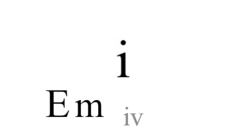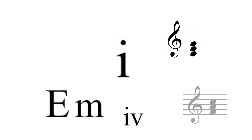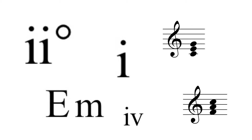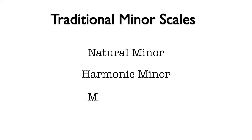For this video, we will begin to explore the triad possibilities from minor keys. Chords can be derived from any of the three traditional forms of minor scales: natural minor, harmonic minor, and melodic minor.